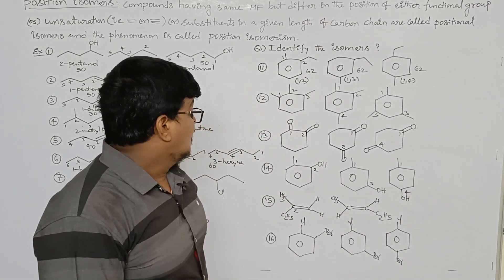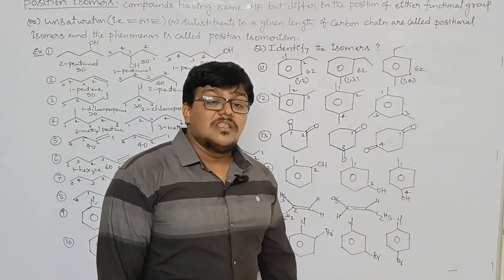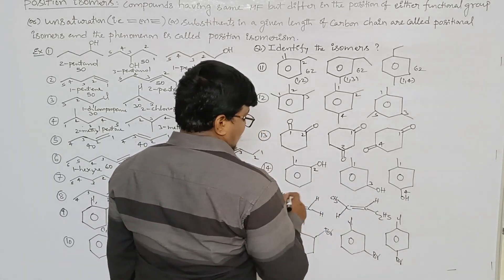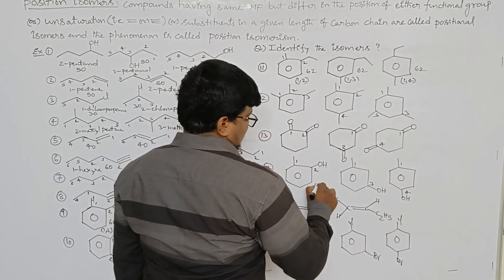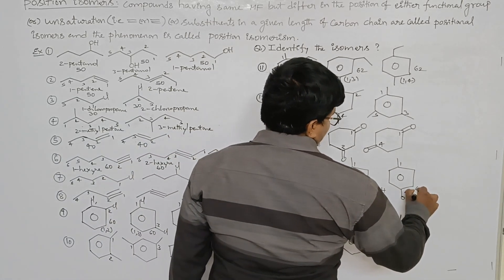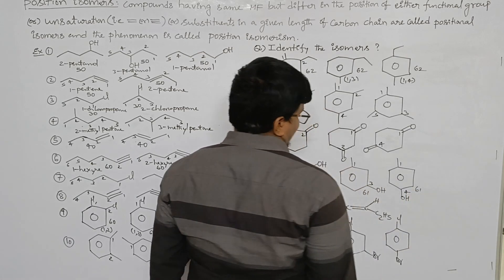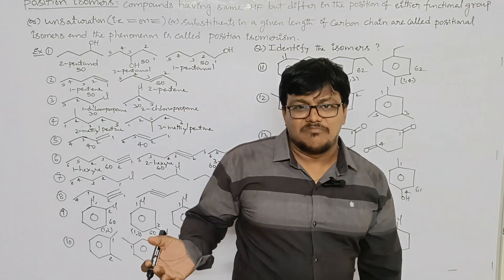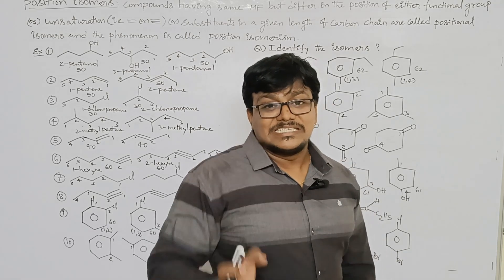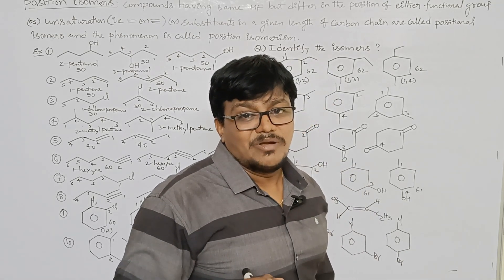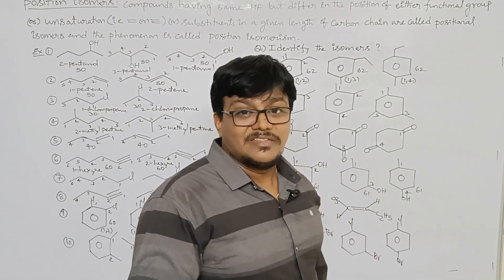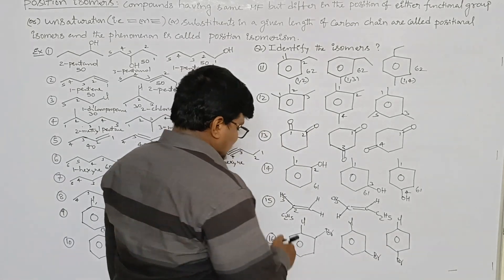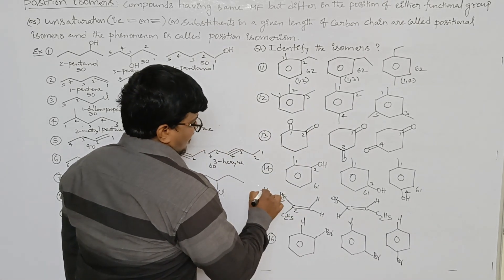These three trimethylbenzene compounds have the same isomeric number — 61, 61, 61. Same isomeric number but different position means they are positional isomers.